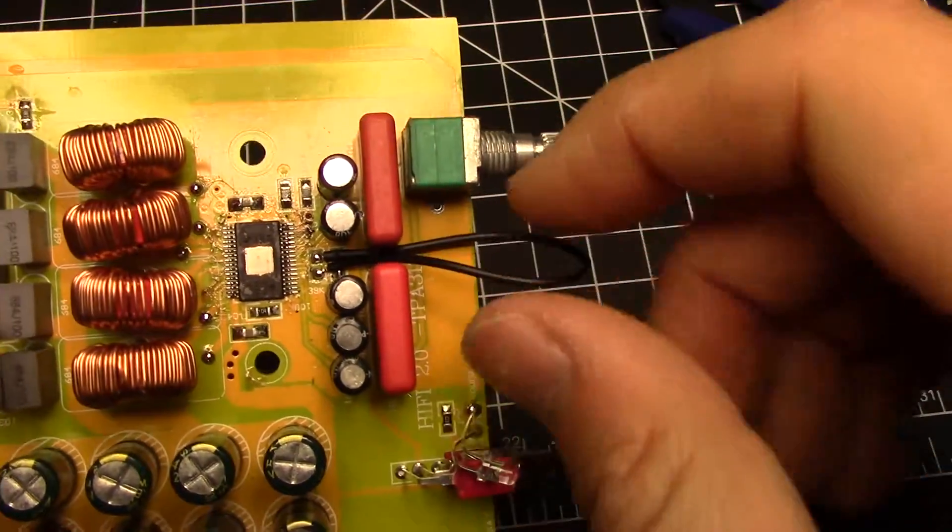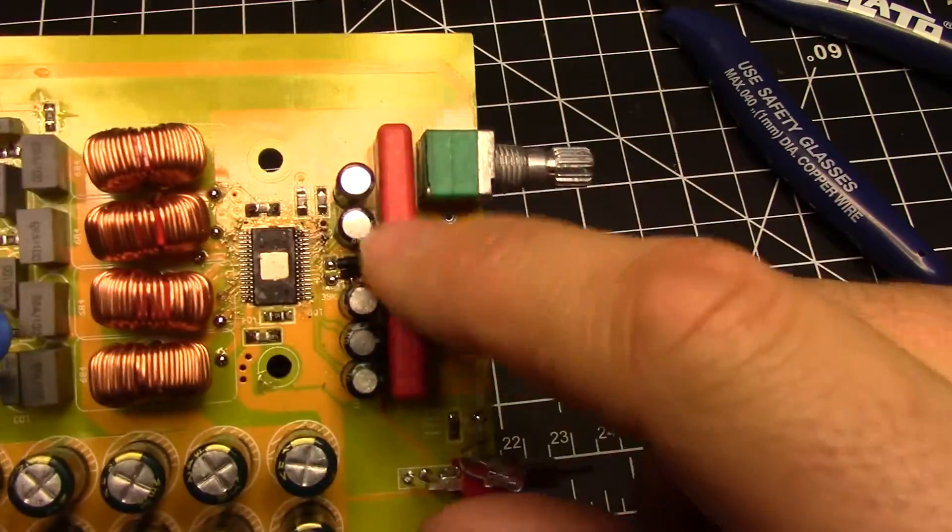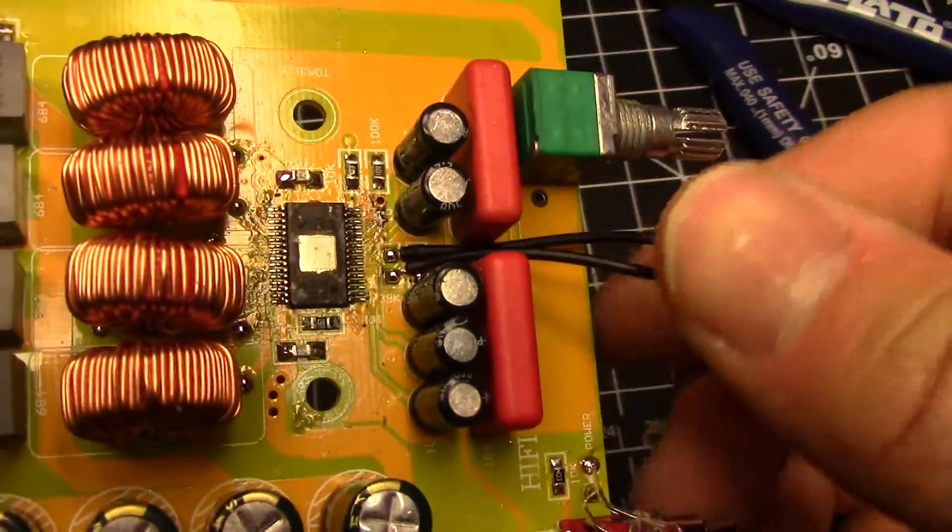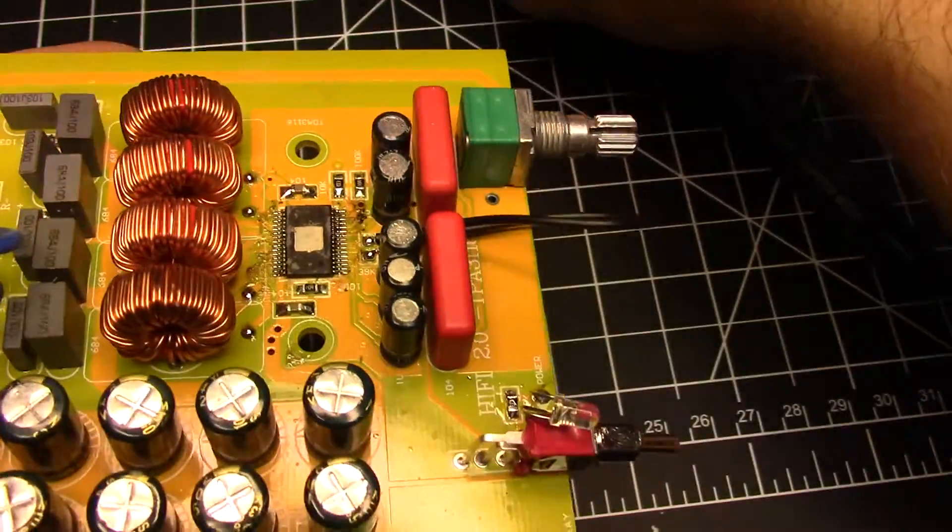The problem is when the heat sink's on here, there's very little clearance. It covers everything up.